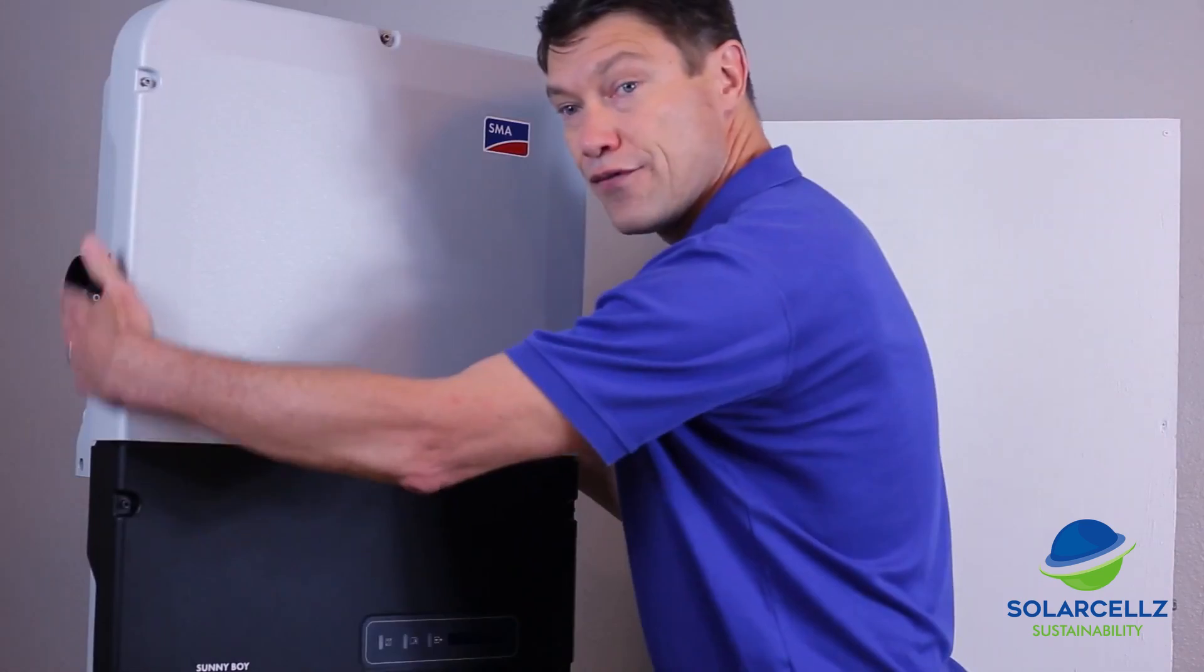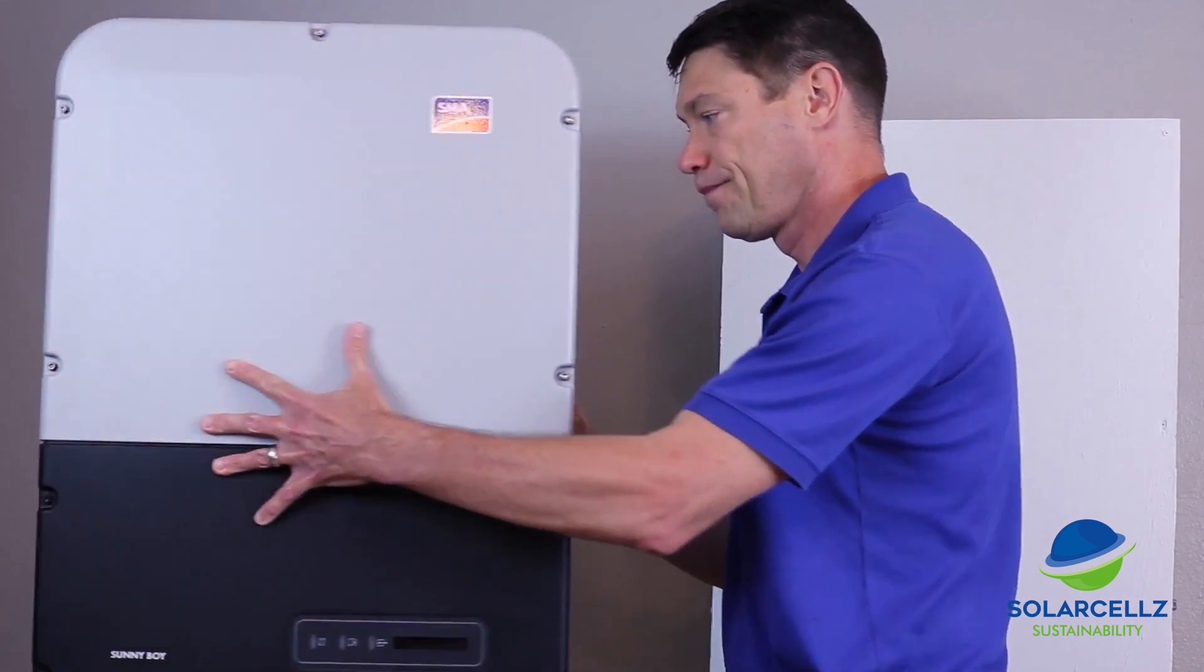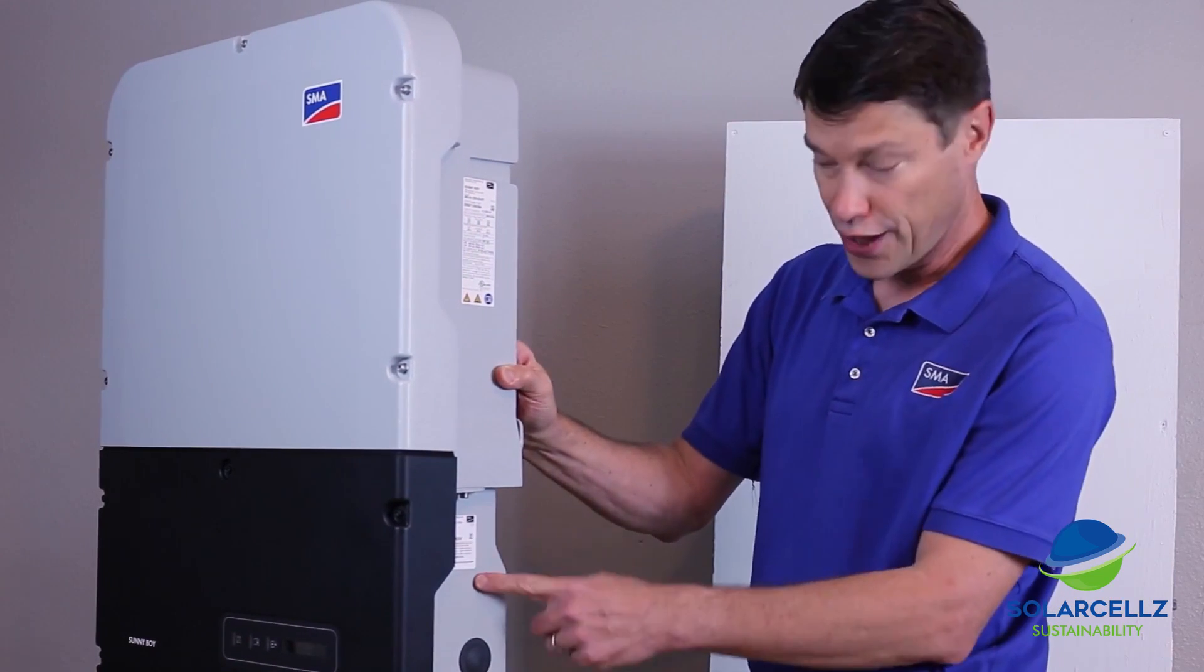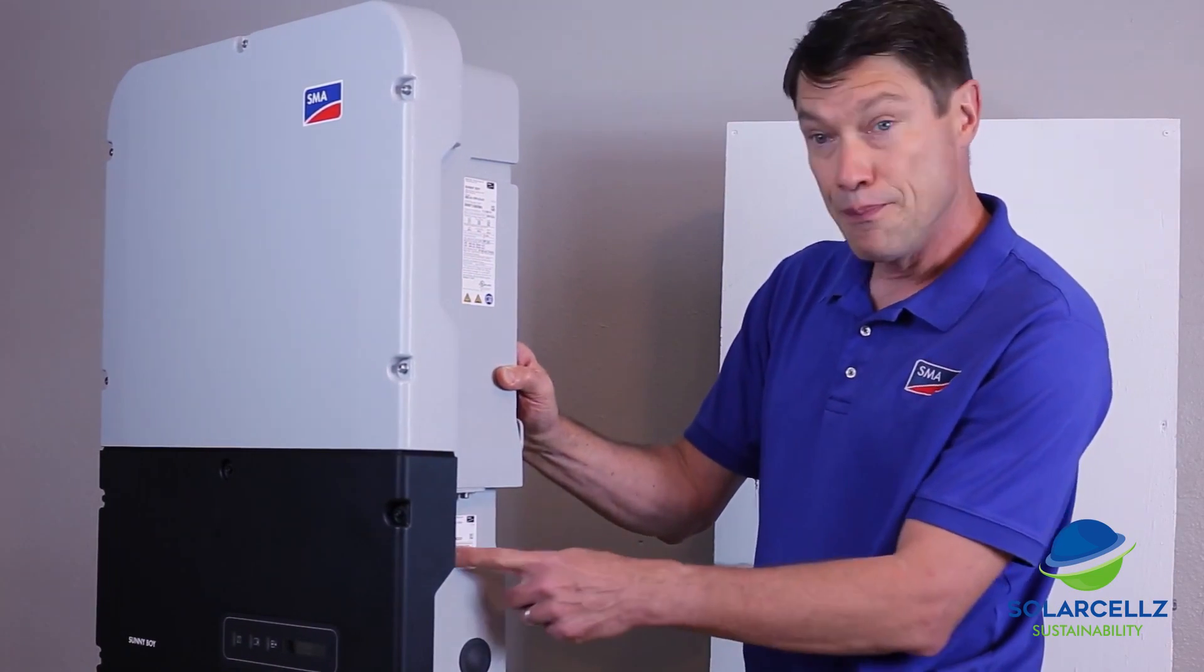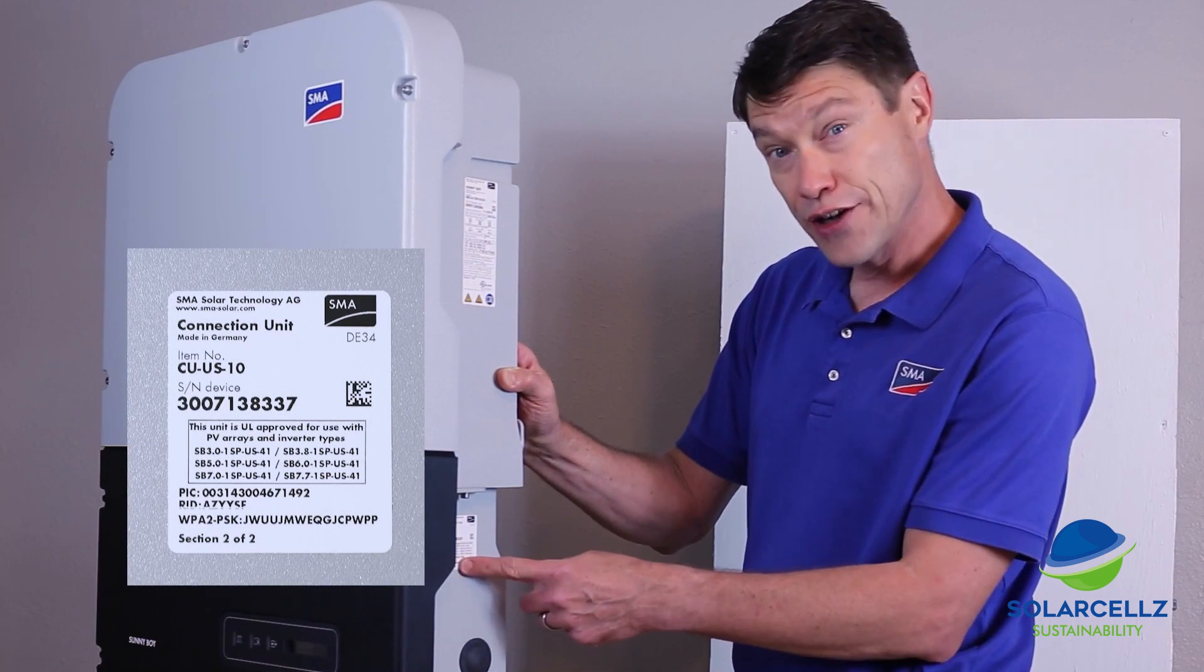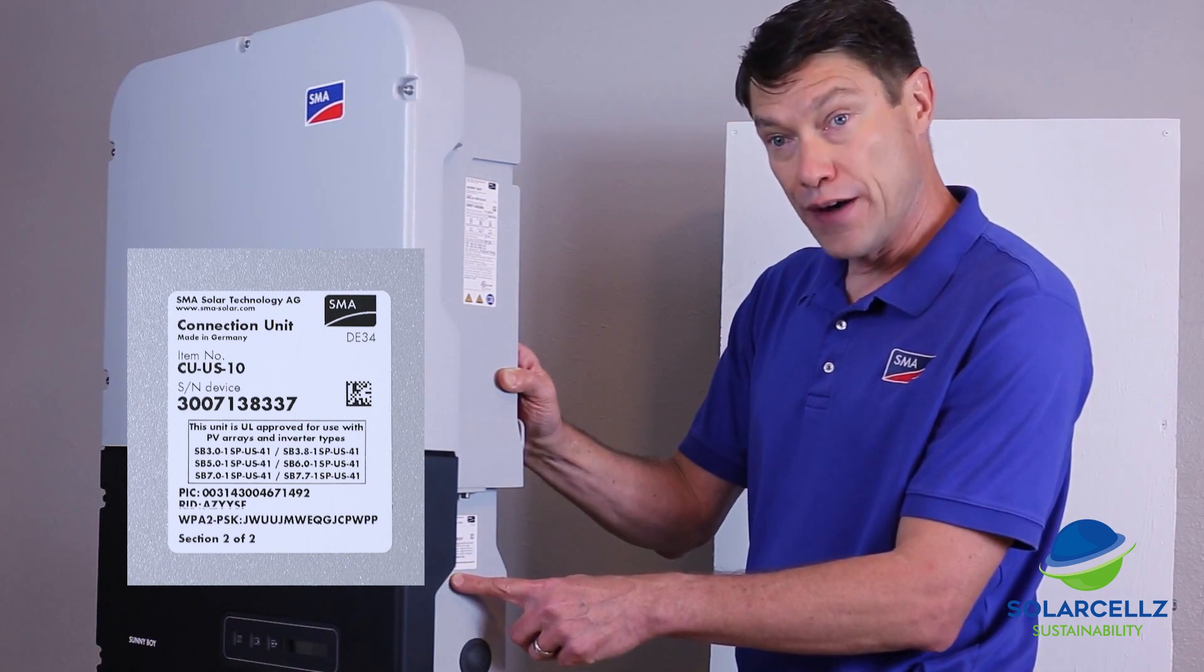On the left side of the inverter, you will see the load break rated DC disconnect. And on the right side of the inverter, in the lower section, you'll notice that there's a sticker with the main device serial number, as well as the PIC and RID codes for registration on Sunny Portal, and the final 16-digit code for the inverter's self-hosted Wi-Fi.